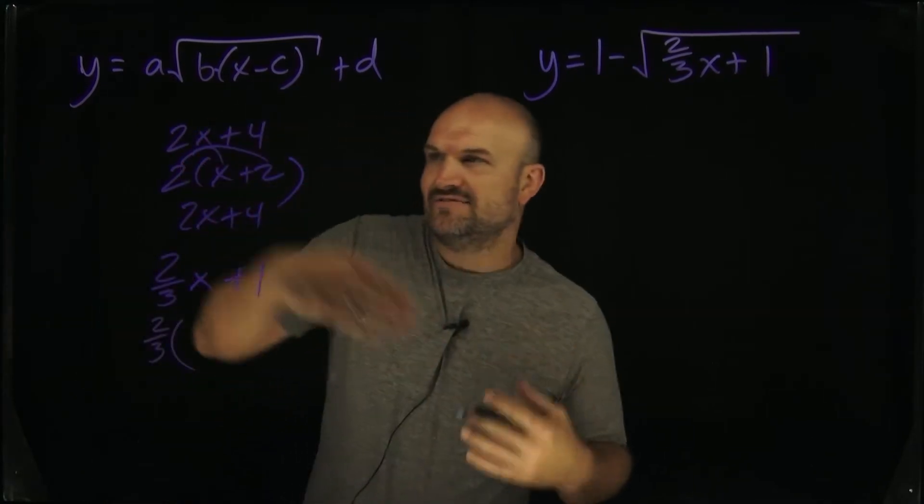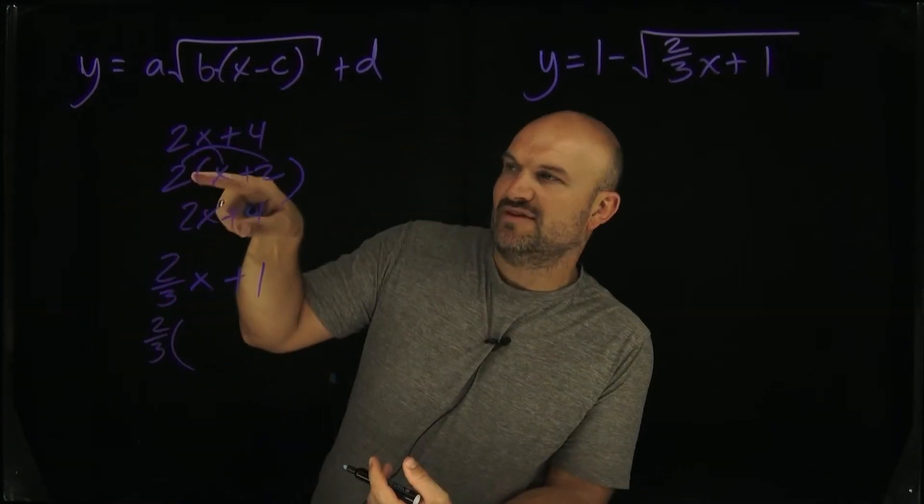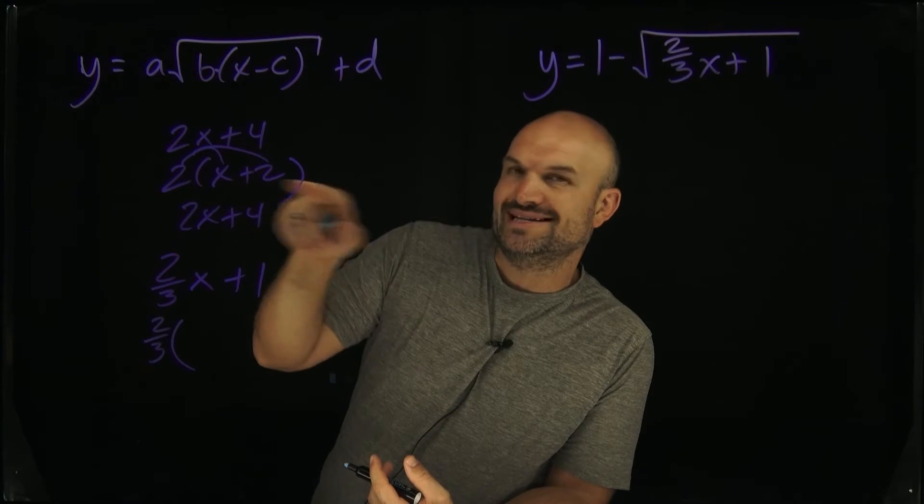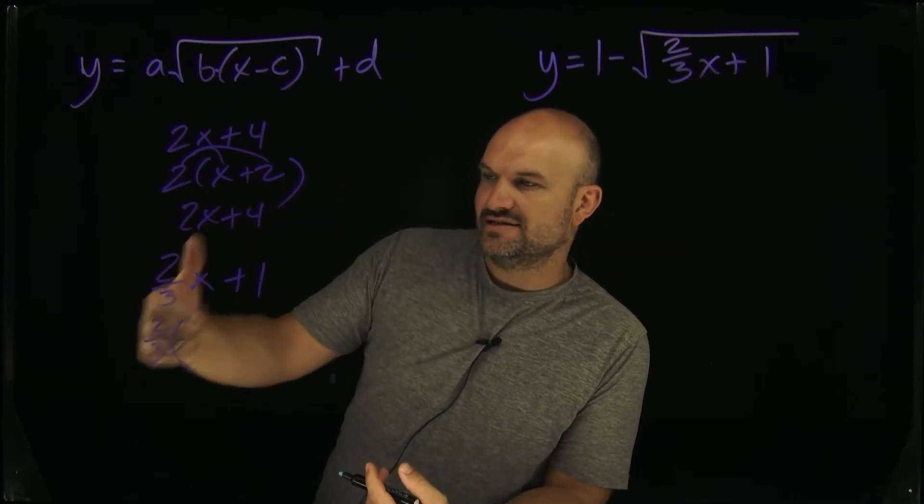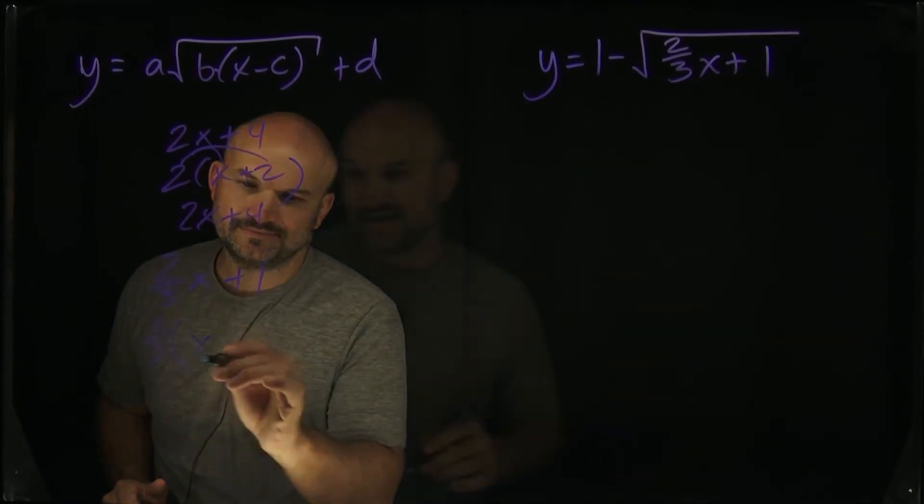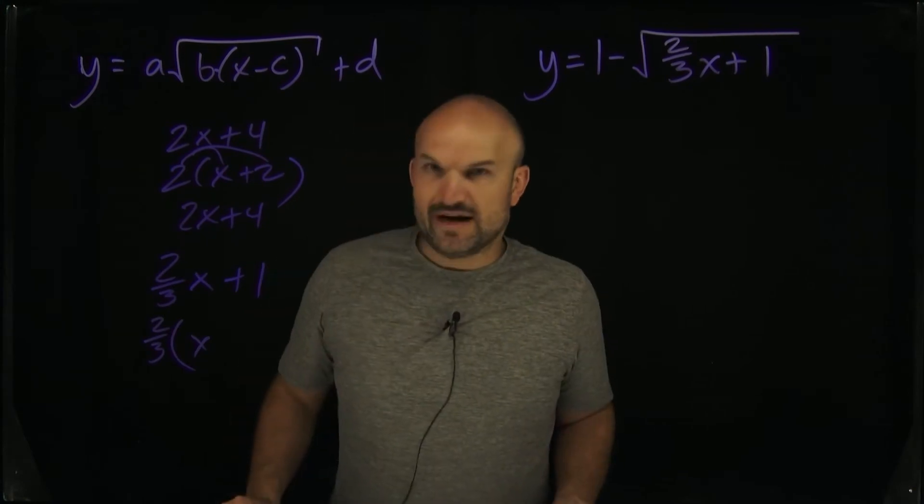All right. So two-thirds. Whenever I divide that number, when I take that term divided by two, whatever is left over, I'm going to put inside this parentheses. So let's do this. Two-thirds x divided by two-thirds. Well, that's just going to be an x. This one might be a little confusing. What is one divided by two-thirds?